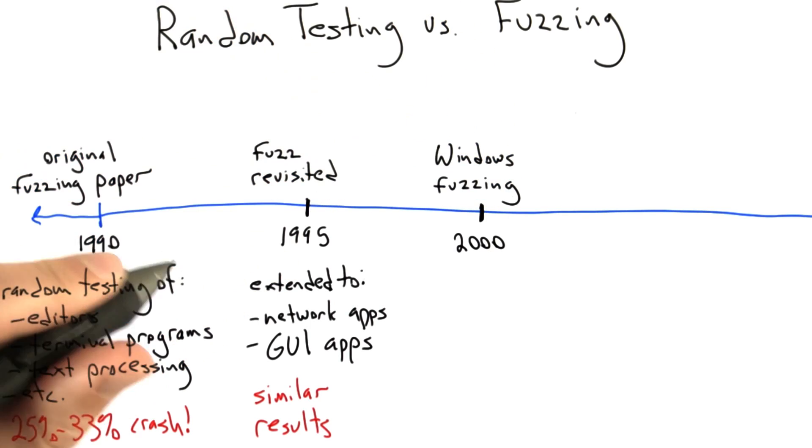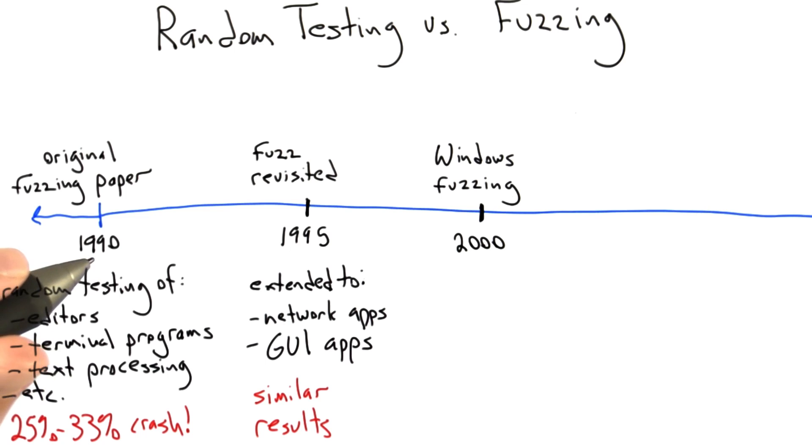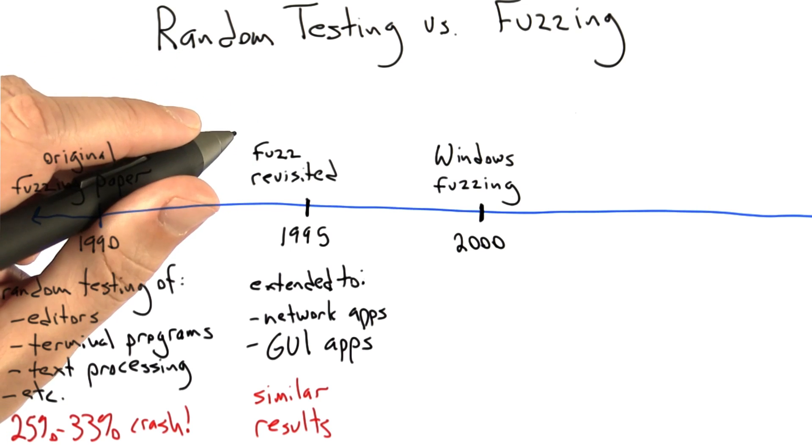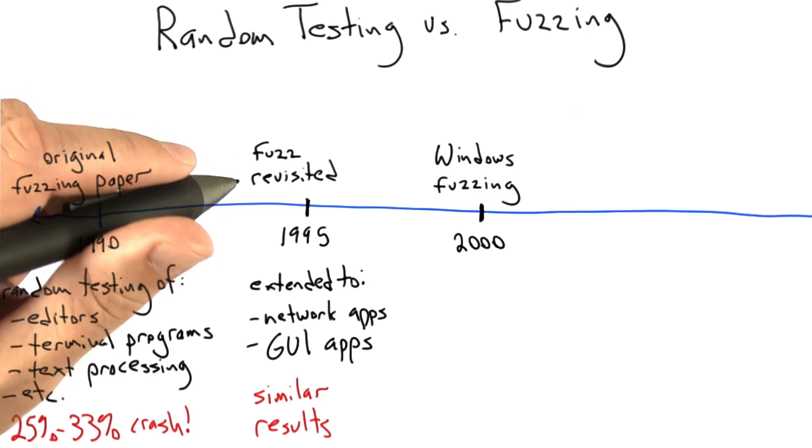In another five years, in 2000, the same people did another study. This time they fuzzed Windows applications. What they found was basically more of the same. They could crash most of the applications that they tested.